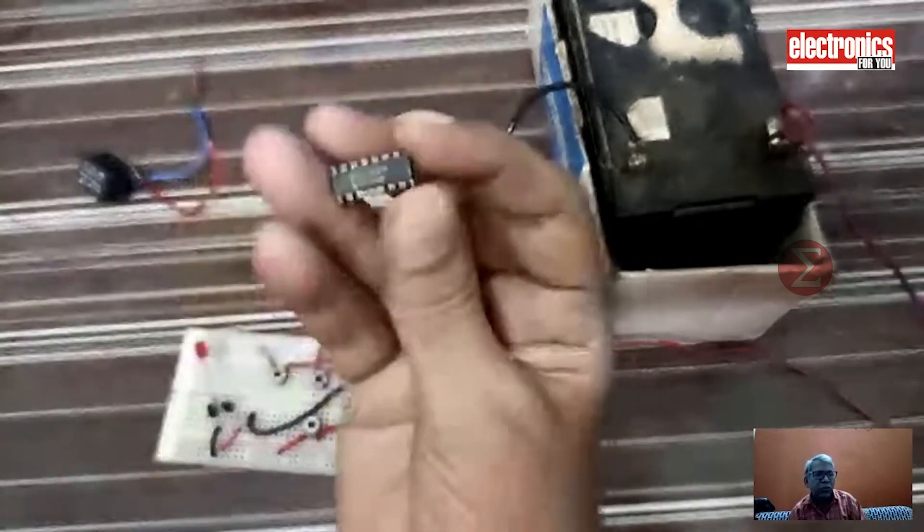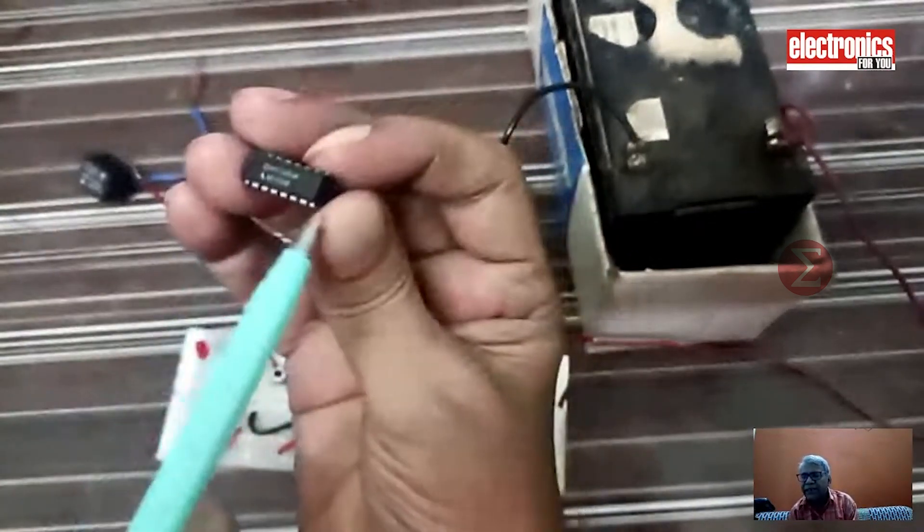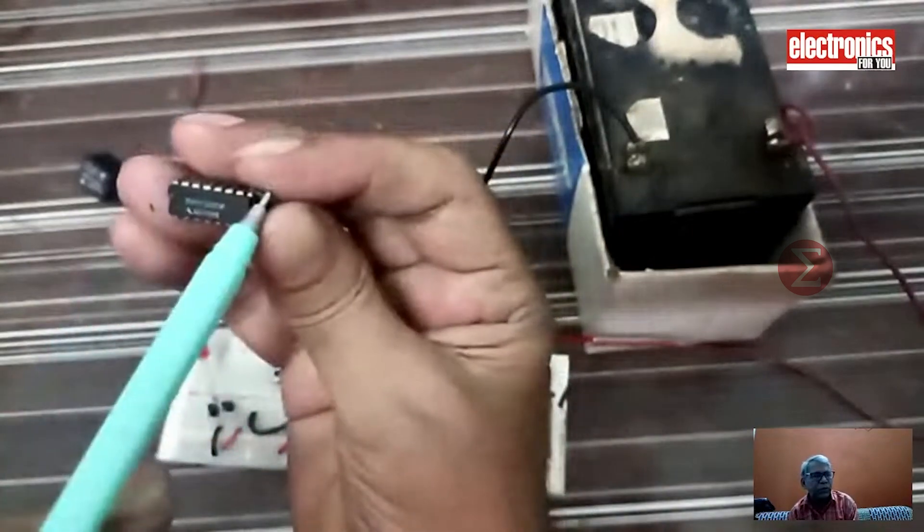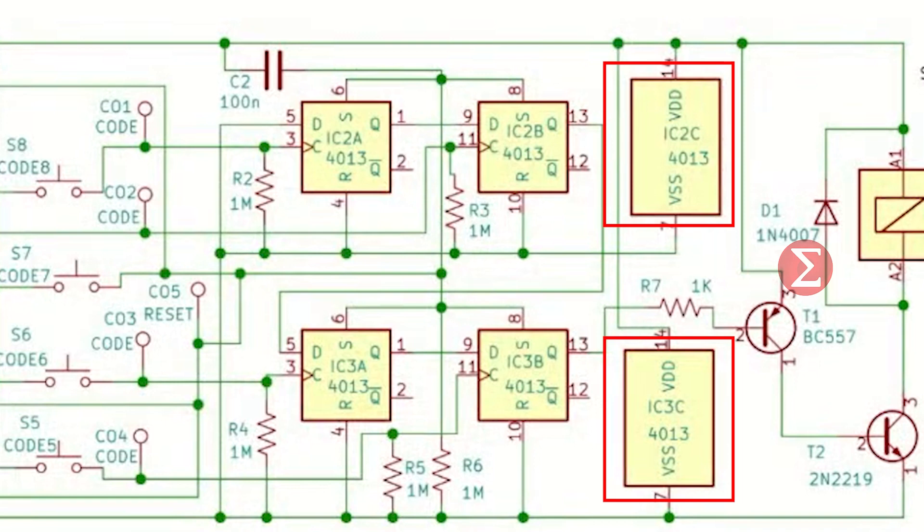This is a D flip-flop IC. This is a DIP package IC with 14 pins. It has a set, reset, and clear pins. One IC has two flip-flops. Hence, we have two such ICs as we needed four D flip-flops in our circuit.